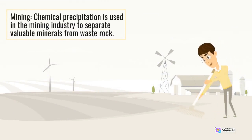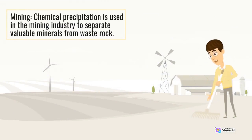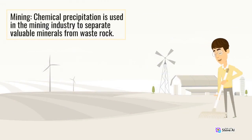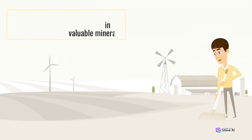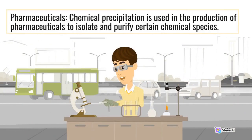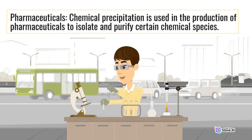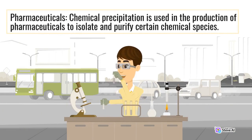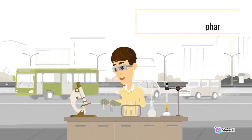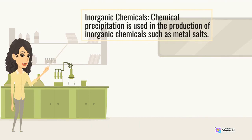Mining: Chemical precipitation is used in the mining industry to separate valuable minerals from waste rock. Pharmaceuticals: Chemical precipitation is used in the production of pharmaceuticals to isolate and purify certain chemical species. Inorganic chemicals: Chemical precipitation is used in the production of inorganic chemicals such as metal salts.